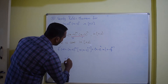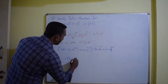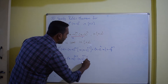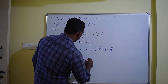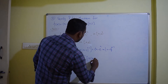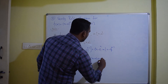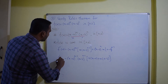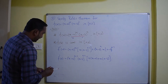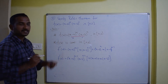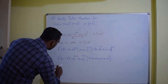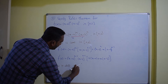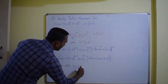Taking out the common factors, f'(x) equals (x minus a)^(m-1) times (x minus b)^(n-1) times [n(x minus a) plus m(x minus b)]. The derivative exists, so f of x is differentiable in the open interval (a, b).